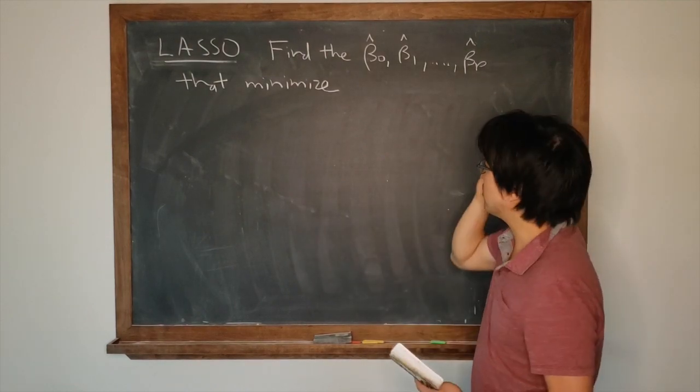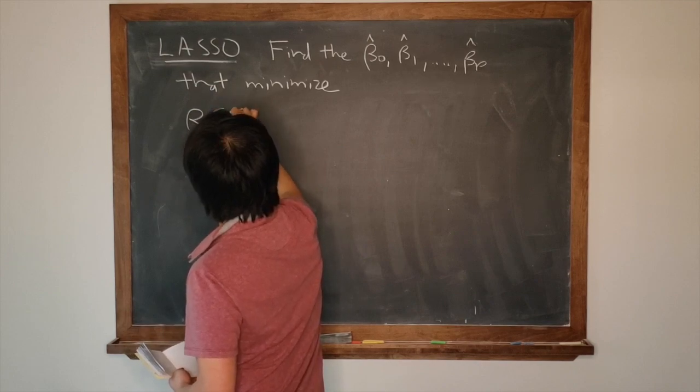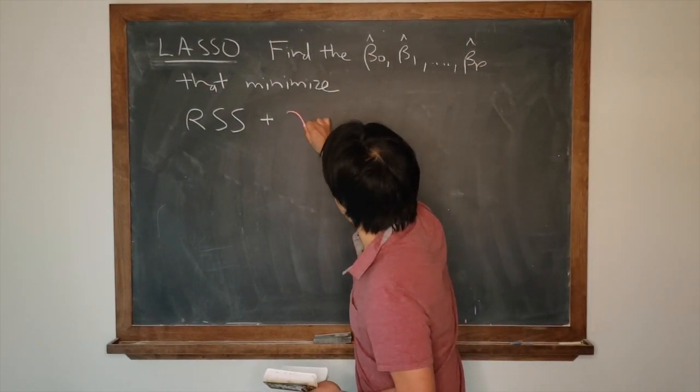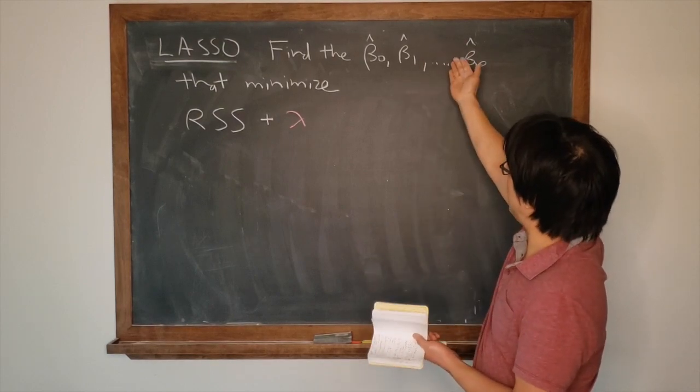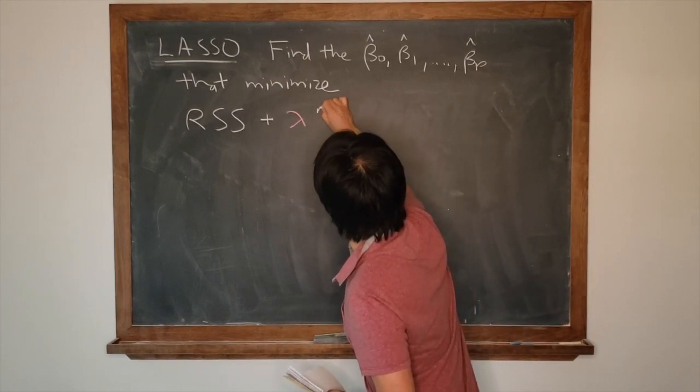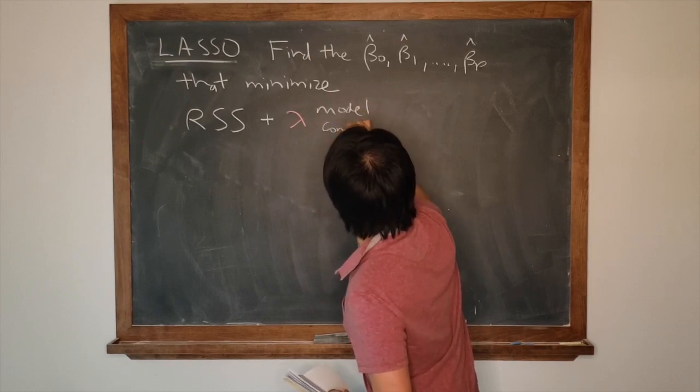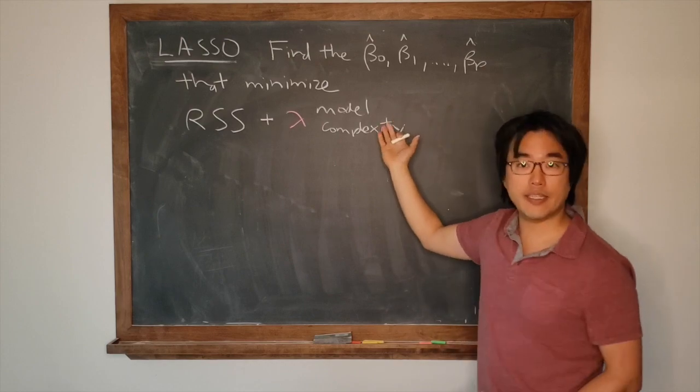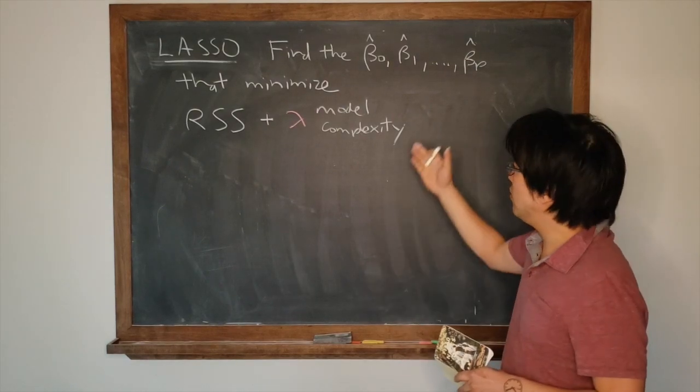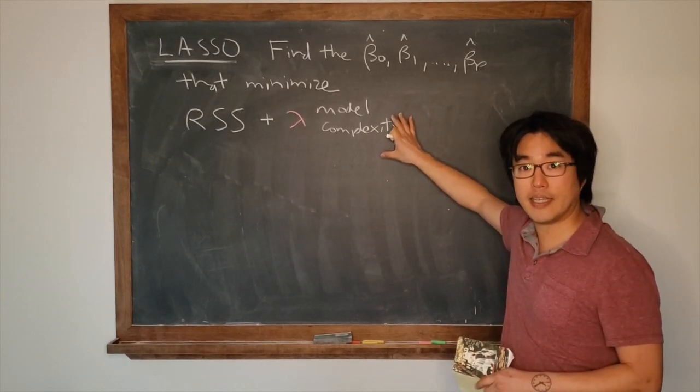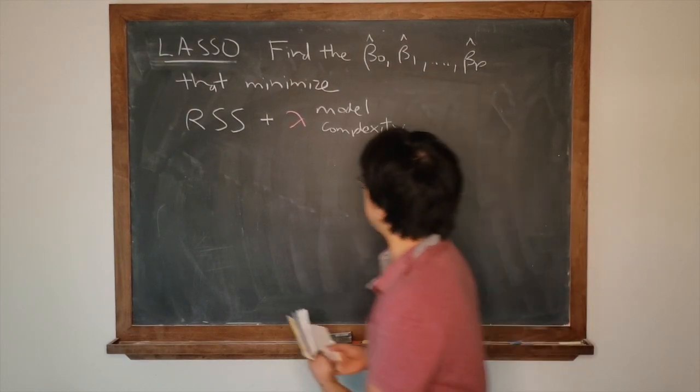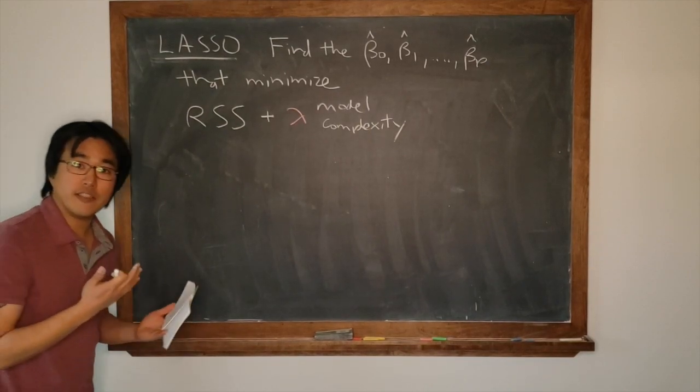Find the values of the intercept and the p slopes that minimize the following equation. It's going to be again RSS plus, this time it's lambda times a measure of model complexity. Recall for trees, the measure of model complexity was the number of leaves, the cardinality. But we're going to do something different.